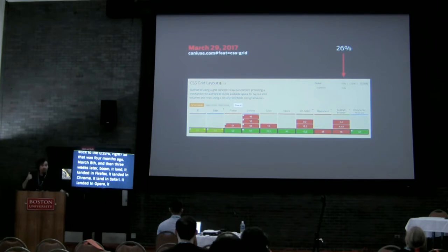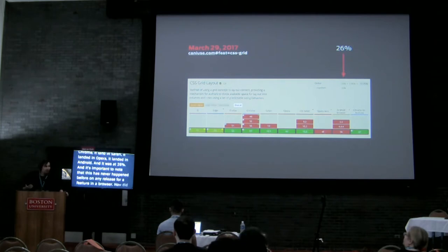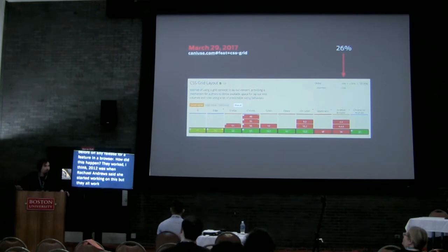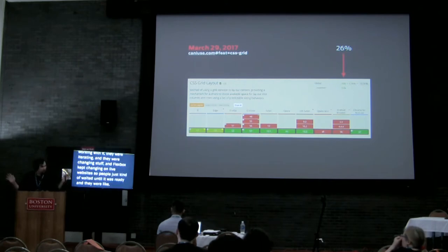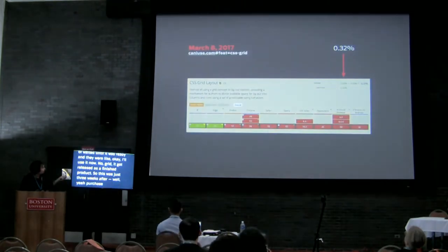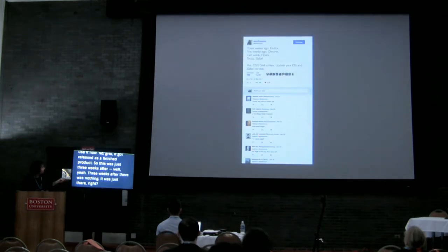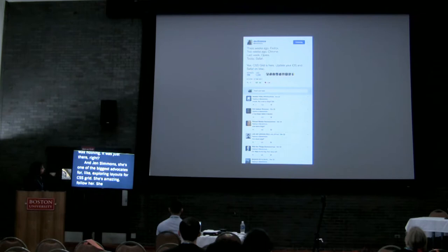We jumped to 26% support — and this has never happened before on any release for a browser feature. How did this happen? Rachel Andrew started working on this spec around 2012, but they all worked behind the scenes. This was very different from Flexbox, which was released and kept changing on live websites, so people waited until it was ready. Grid was released as a finished product — three weeks after there was nothing, it was just there. Jen Simmons, one of the biggest advocates for exploring CSS Grid layouts, wrote on Twitter: 'Three weeks ago Firefox, two weeks ago Chrome, last week Opera, today Safari. Yes, CSS Grid is here.'